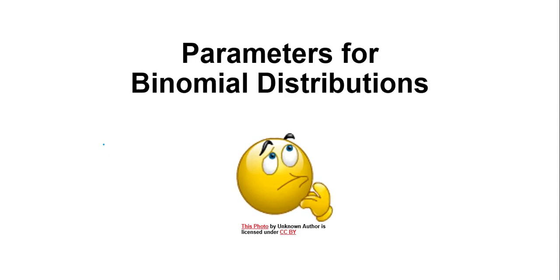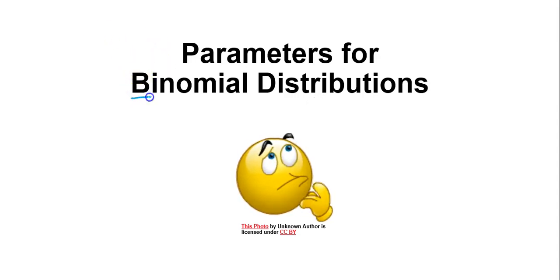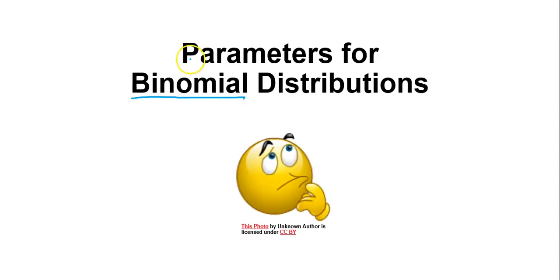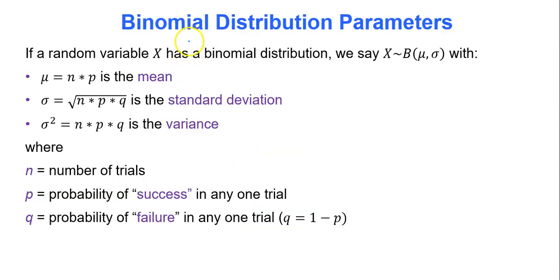We previously talked about the mean and standard deviation of probability distributions. Well, there's good news. When the probability distribution is binomial, there are shortcuts we can use to find the mean and standard deviation. If a random variable x has a binomial distribution, we say that x is binomial with a mean mu and standard deviation sigma. If you take any statistics courses after this one, you might see that formal theoretical notation.